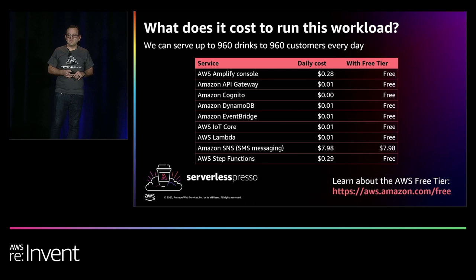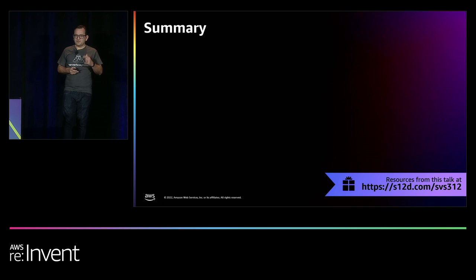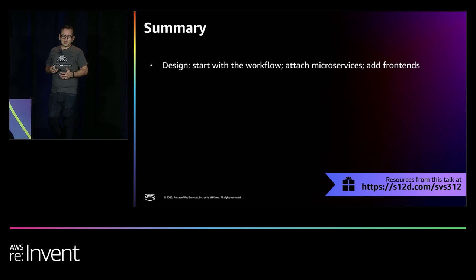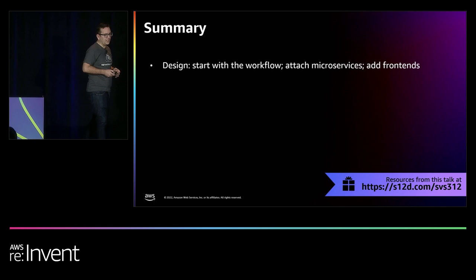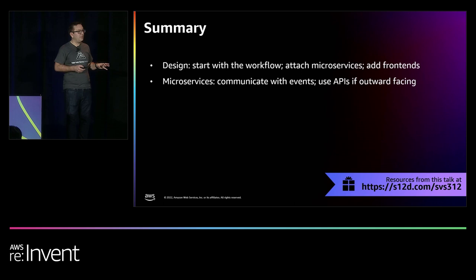To summarize: when we designed this, we started with the workflow, then attached microservices as it developed, then added front ends. We decided to communicate between microservices with events, only using APIs if they were outward-facing — we eliminated private APIs completely. This made it a lot easier to develop things nimbly and on the fly. For real-time front ends...